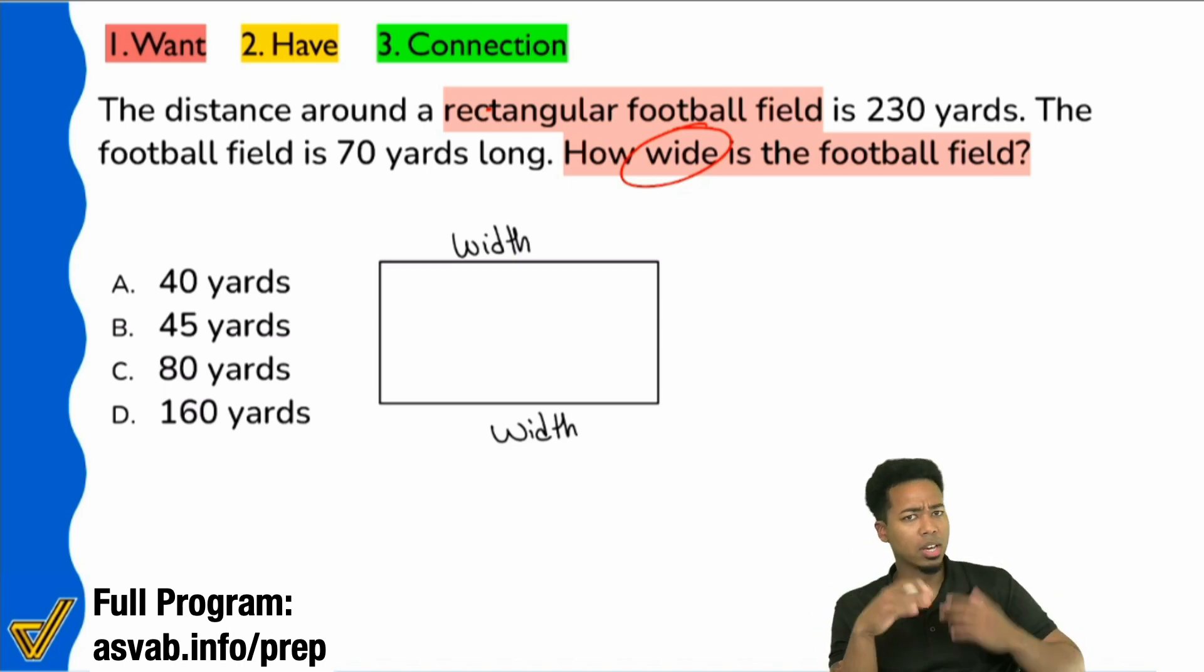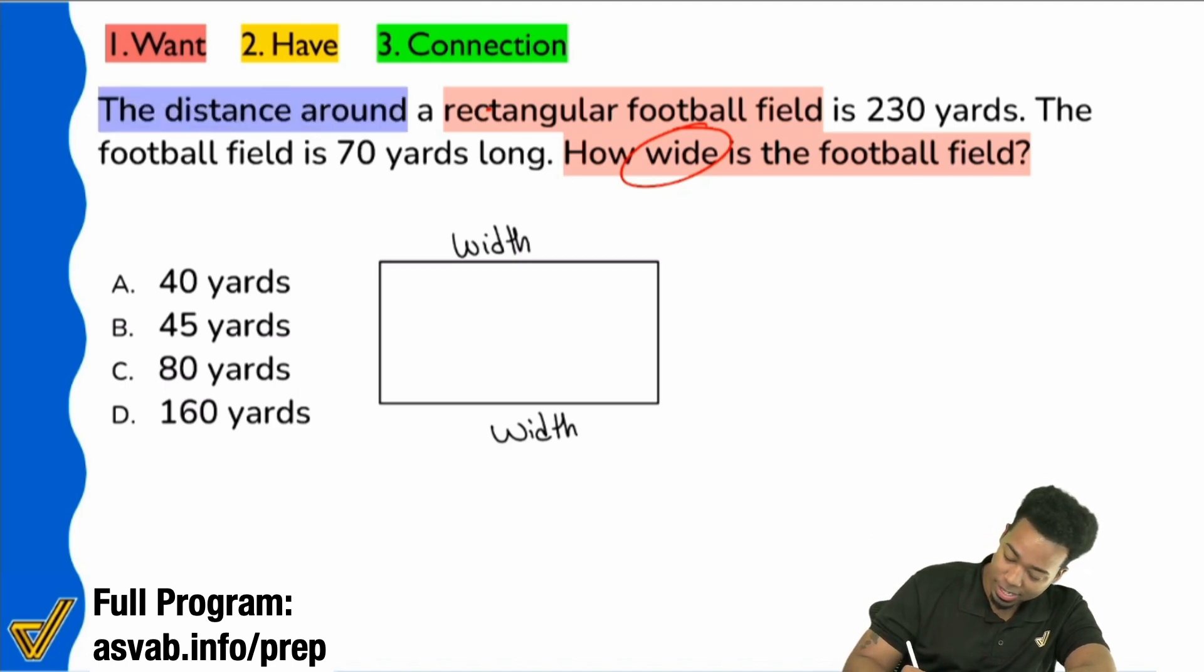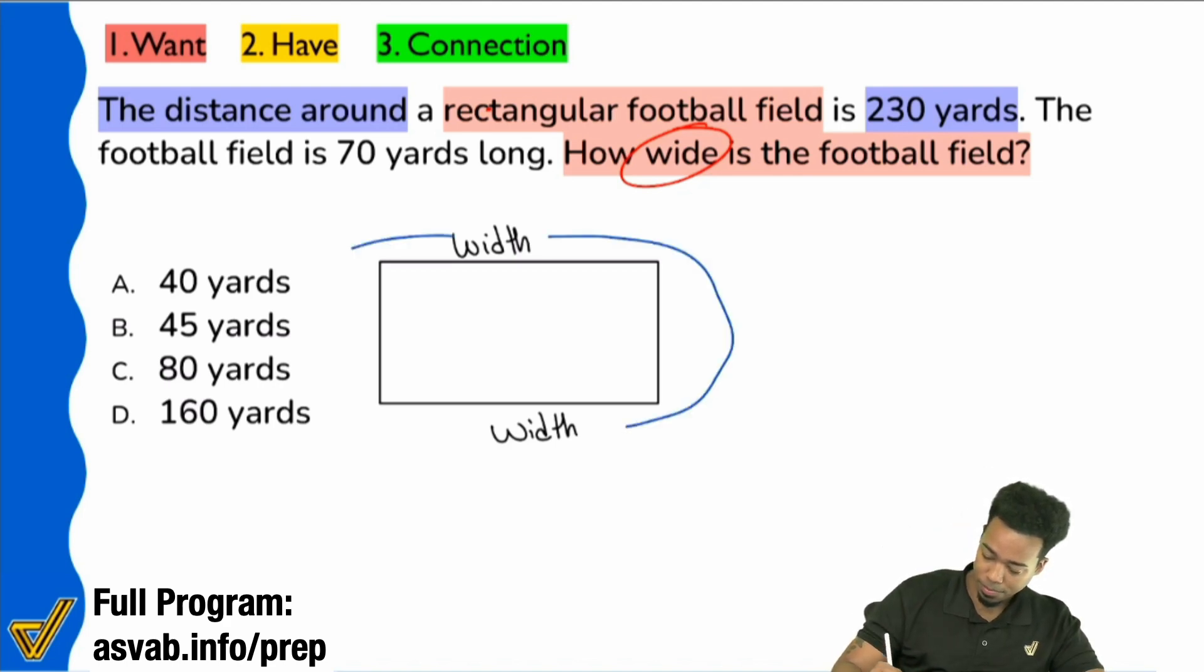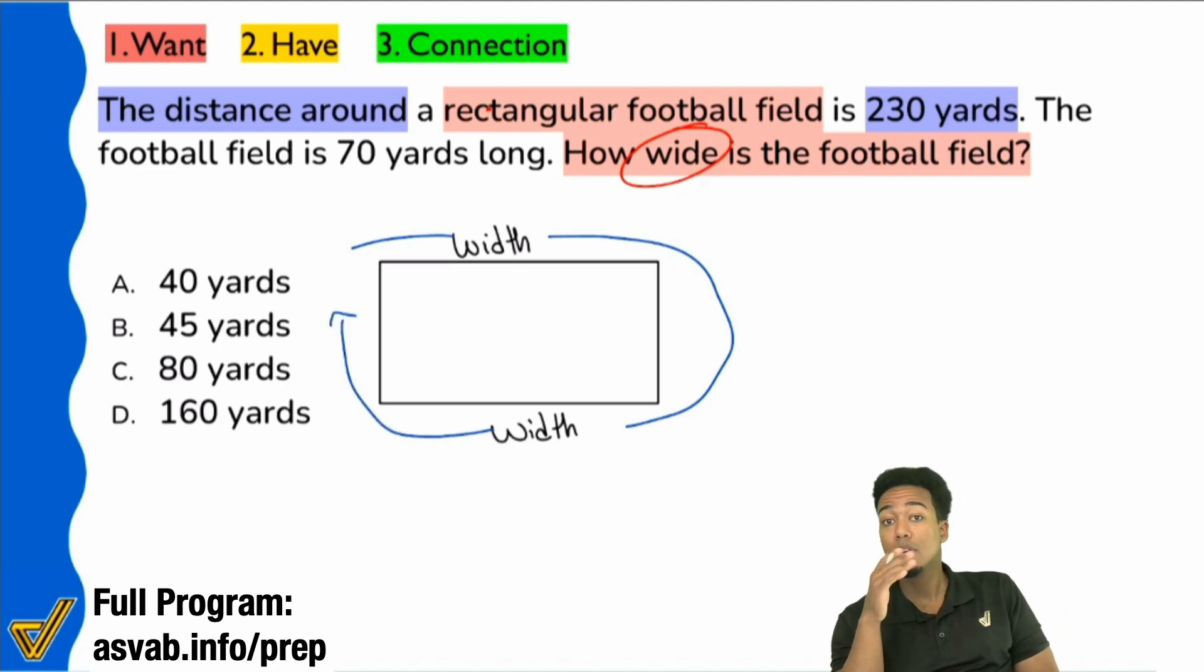There's a little bit of a hidden piece of information here that I know some of us struggled with comprehending. Second step is to go through the information and write down what each piece means. When it comes to geometry, there are specific keywords and specific ways that things are mentioned that are going to give it away. It says, the distance around the rectangular football field is 230 yards. What is that code for? The distance around. I see a couple of people already chiming in saying perimeter. When we're talking about the distance around a shape, that's perimeter.